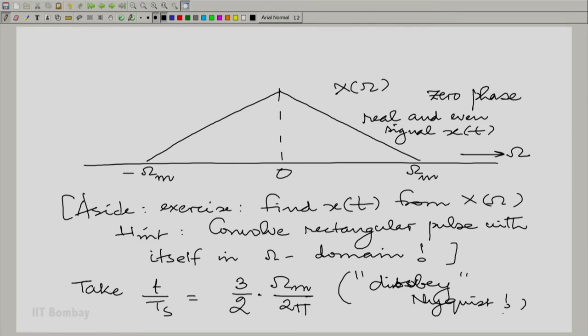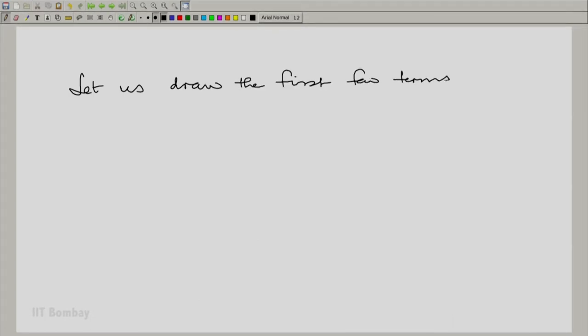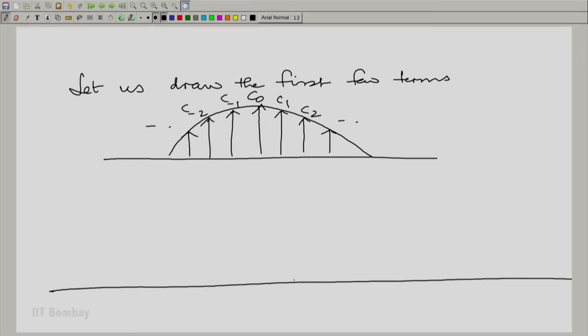What would happen? Let us take a first set of terms here. Let us draw the first few terms. And remember, in the train of pulses not impulses, we saw that c0, c1 had magnitudes that look like this. Recall from the previous session, c0 might be somewhere here, c1 somewhere here. So, for the first few terms, we agreed that there would be a decreasing set of values in magnitude. So, what would happen? Now, I sort of compress it. I have omega m here. And I have omega s here, which is 2 pi by Ts. And that is 3 by 2 times omega m.